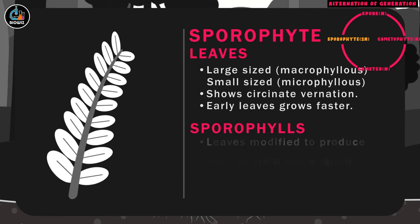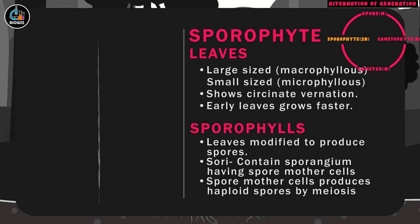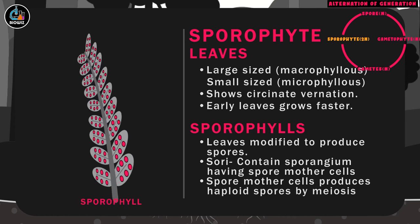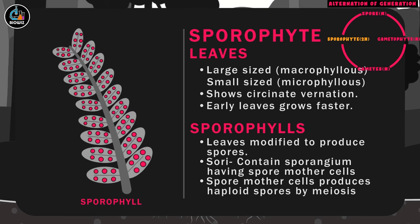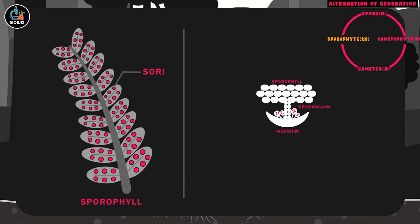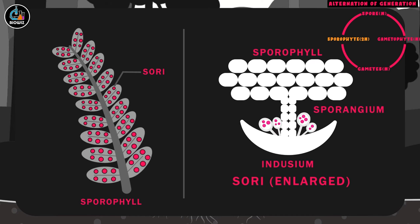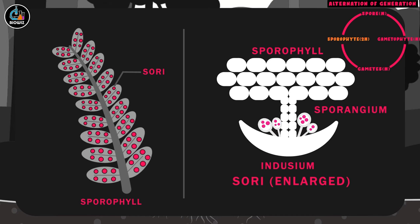In most of the pteridophytes, the leaves are modified to produce spores and hence called sporophylls. Each sporophyll develops numerous sori on the lower side. The sori has multiple sporangia having specialized cells for spore formation. These cells are spore mother cells, as they divide by meiosis to produce haploid spores. In some species, the sporophylls may be compactly arranged to form cones or strobilus.